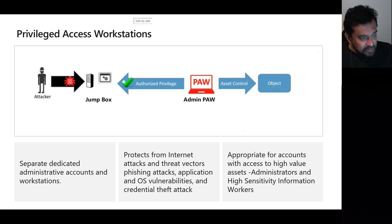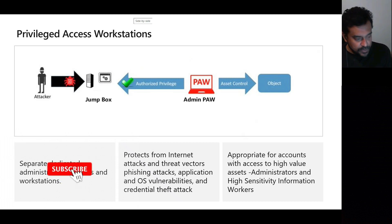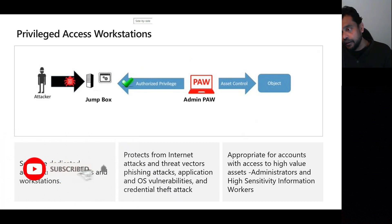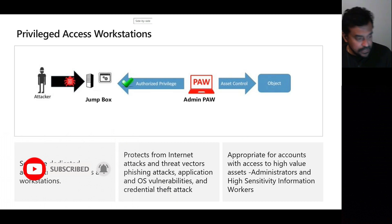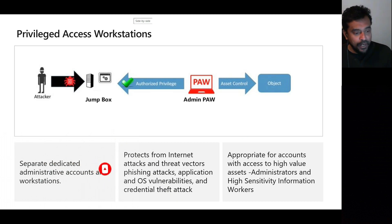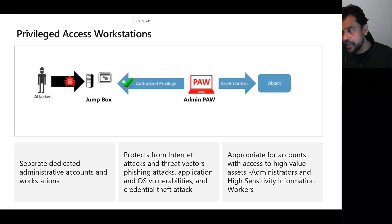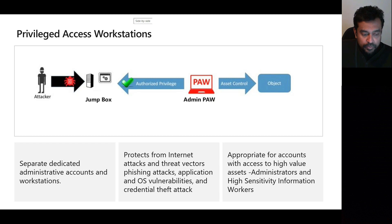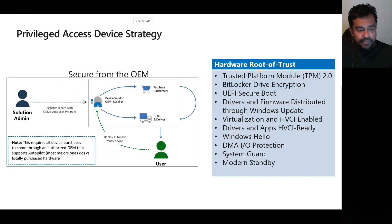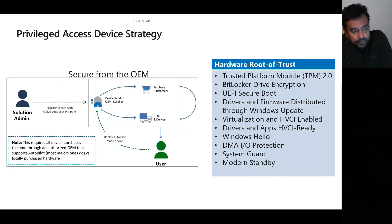Another approach is using jump boxes — separate virtual server instances that only authorize access from an administrative Privileged Access Workstation. This is another way to implement secure administrative access, and there are a number of strategies you can combine for a privileged access device strategy.